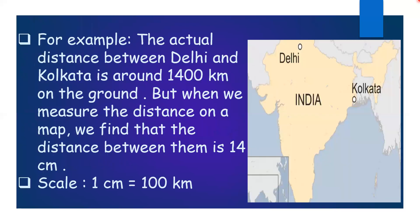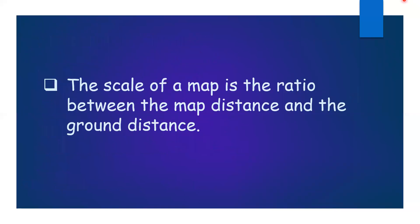The actual distance between Delhi and Kolkata is around 1400 km on the ground. But when we measure the distance on a map, we find that the distance between them is 14 cm. So we can say that a distance of 1400 km on the ground is shown through 14 cm on the map. That means 1 cm on the map represents 100 km on the ground. The scale of a map is the ratio between the map distance and the ground distance.